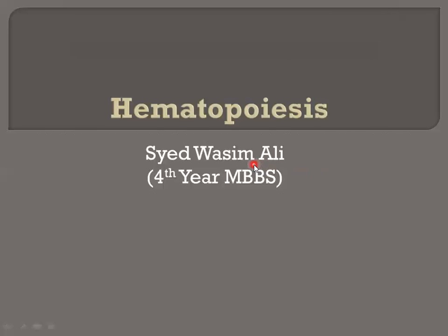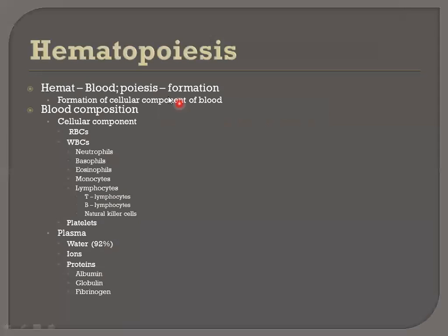I am Sayyidu Simali and today we will discuss hematopoiesis. The term is derived from two words: 'hemat' meaning blood and 'poiesis' meaning formation. So the formation of the cellular component of blood is called hematopoiesis.